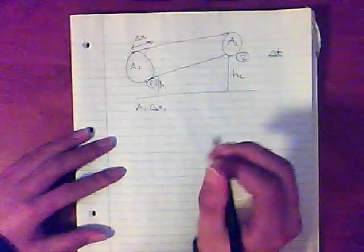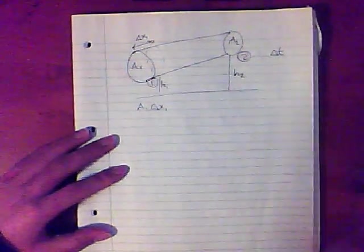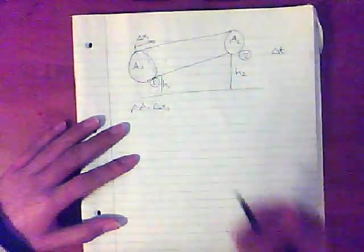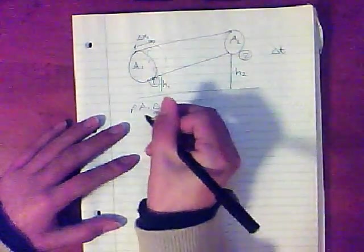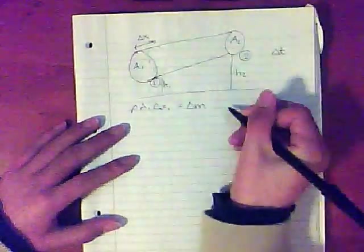And now, to get the mass of that water, you simply multiply it by density, which is denoted by the Greek letter rho. So you have rho A delta x is equal to the mass entered the pipe.